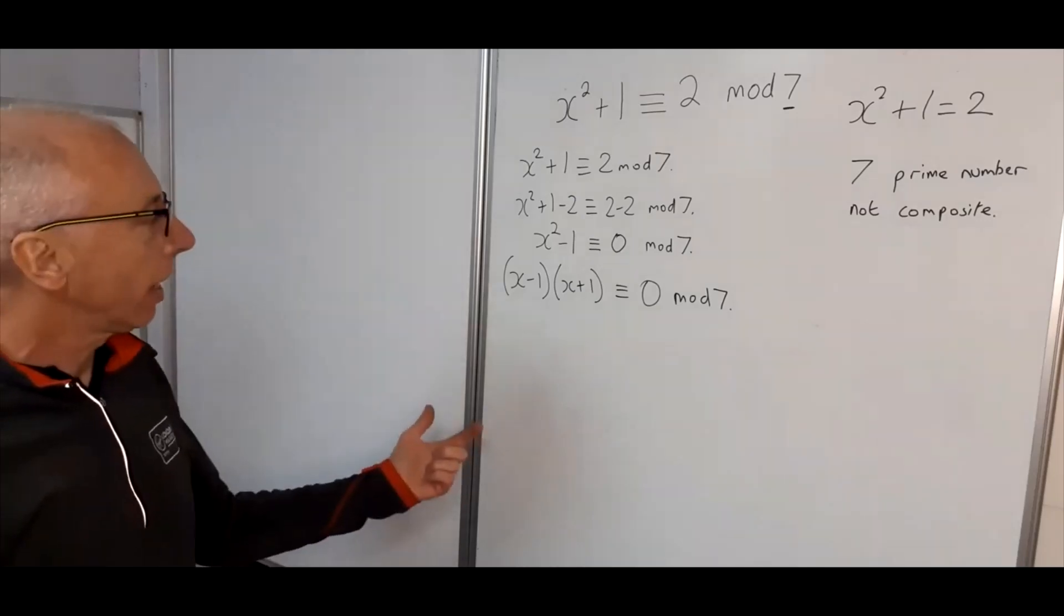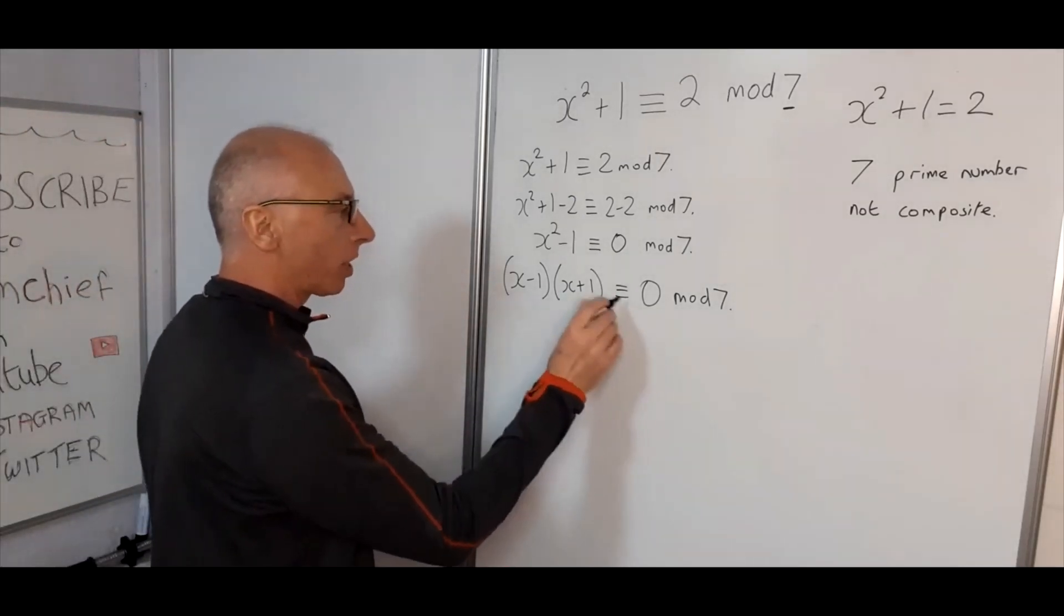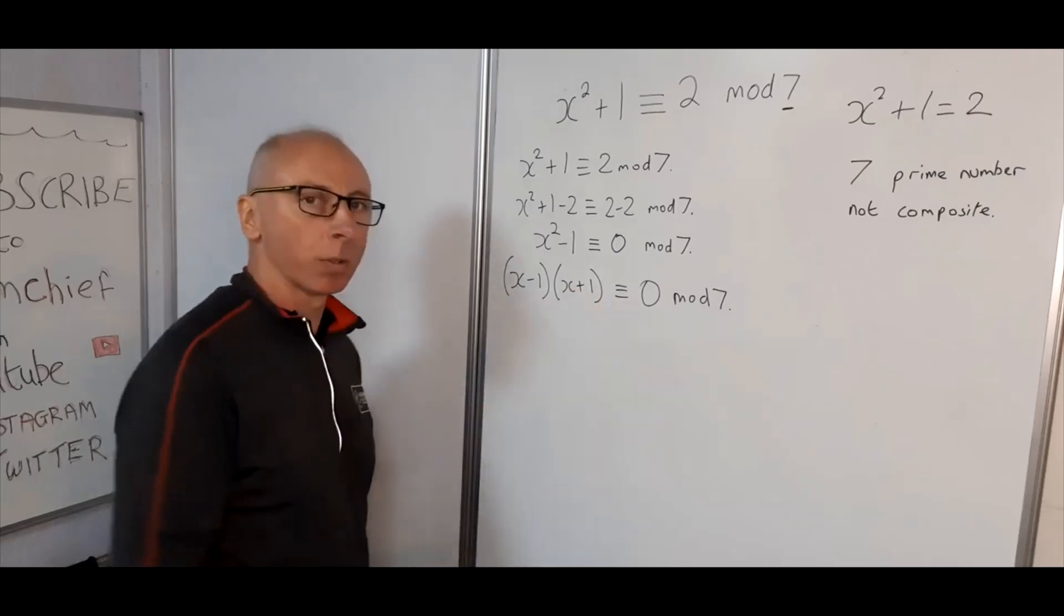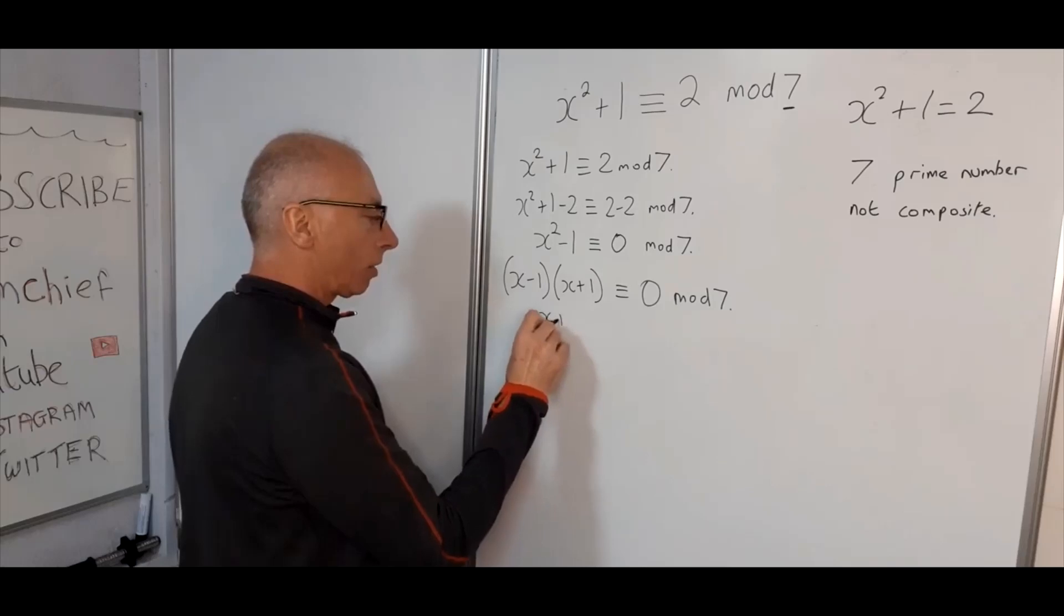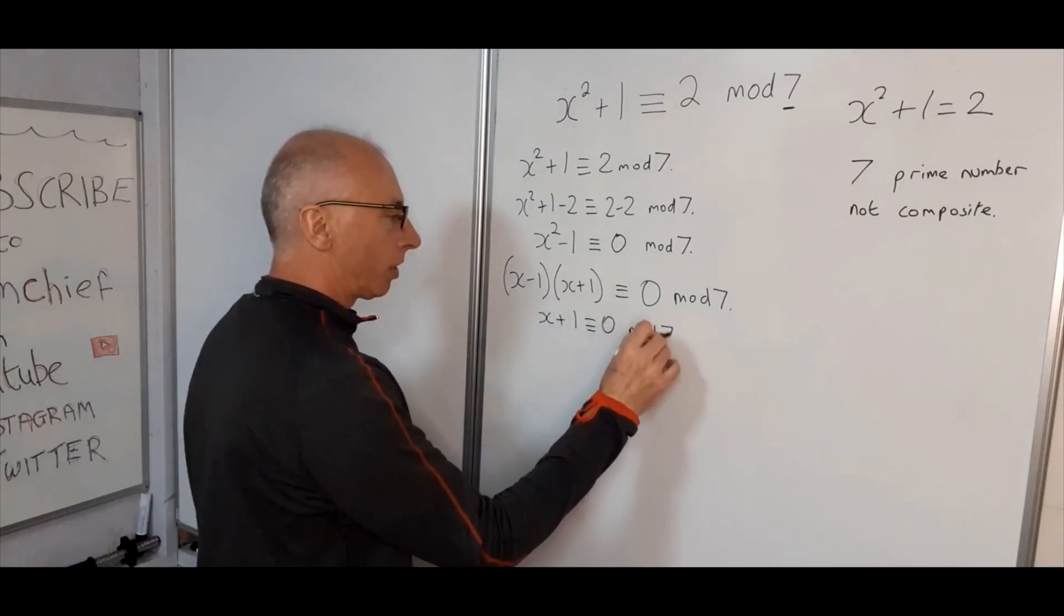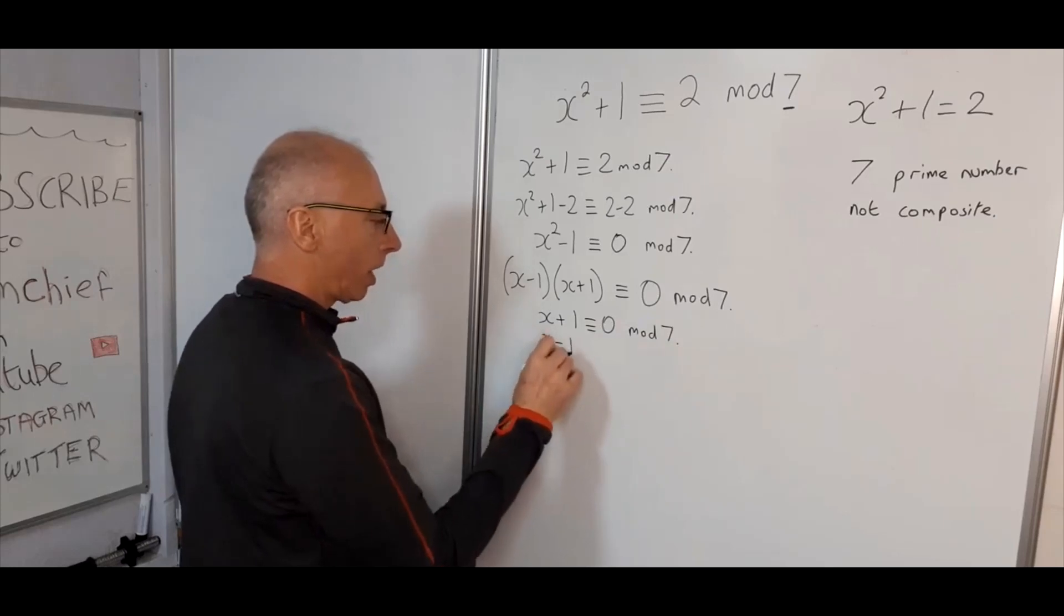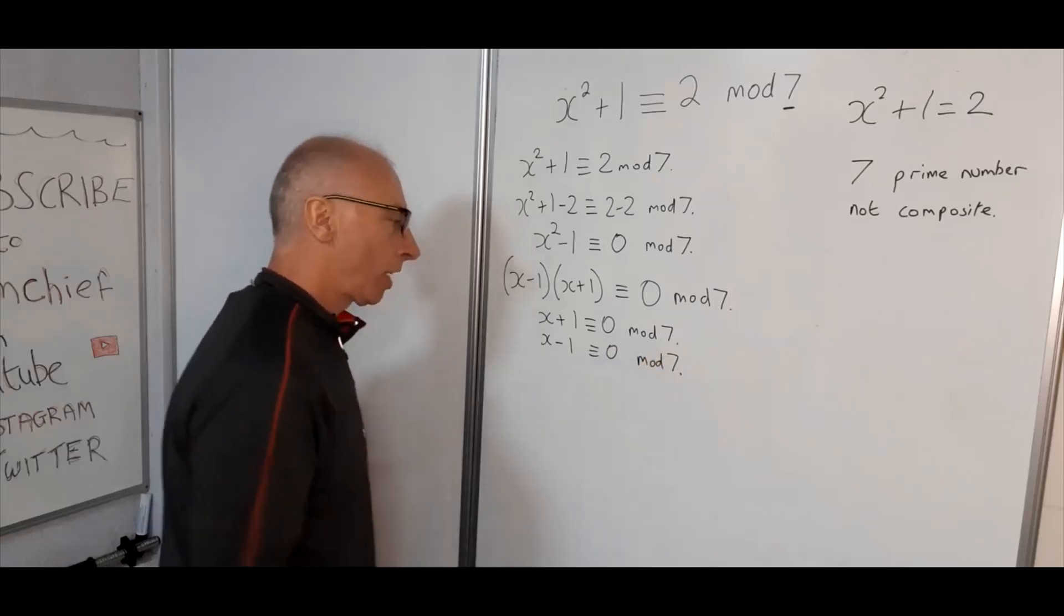Okay, so now what we're left with is, because for this to be 0, either one of these congruences has to be 0. So then we've either got x plus 1 is congruent with 0 mod 7, or x minus 1 is congruent with 0 mod 7.